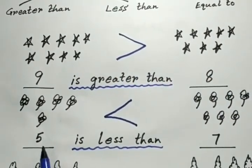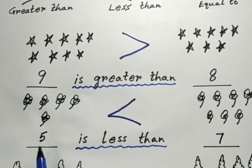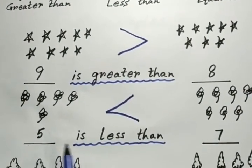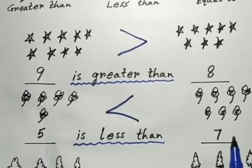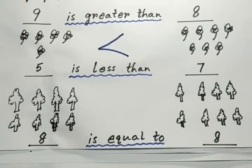Now to read the numbers or the sentence, we have to start from the left. 5 is less than 7.